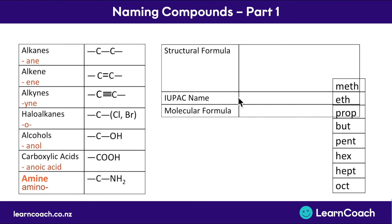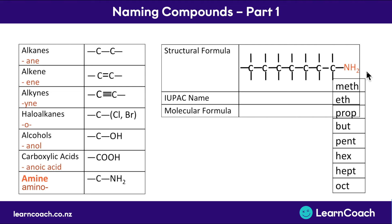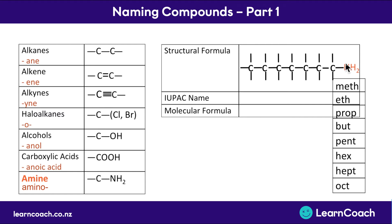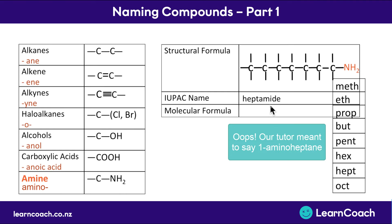Amines have an NH2 group attached. For NCEA purposes, you can assume they're always on the end carbon, so you don't have to worry about numbering. To name an amine, take the prefix and add 'amide' onto the end. For a seven-carbon chain, the prefix is hept, so the name is heptamide. The molecular formula is C7H15NH2, keeping the NH2 separate so you can immediately see there's an amine group on the end.